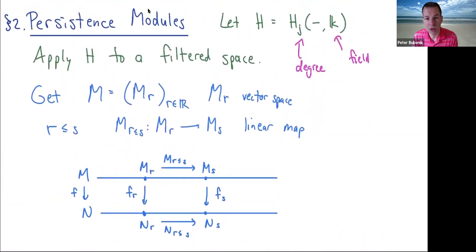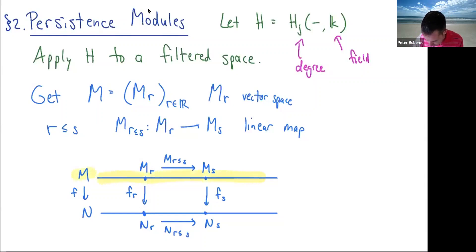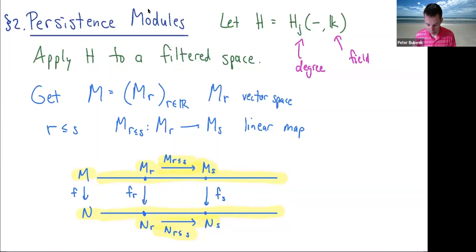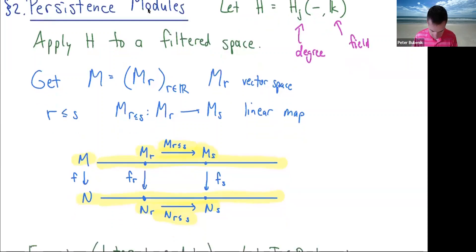Persistence modules. We have these algebraic objects; of course we also need to define maps between them. A map between persistence modules: we visualize a persistence module M as a real line — every point on the real line has a vector space attached to it, and going left to right we have a linear map. If we have two such persistence modules, a morphism between them consists of a collection of maps going down vertically, with the condition that everything commutes. That gives us a morphism of persistence modules.